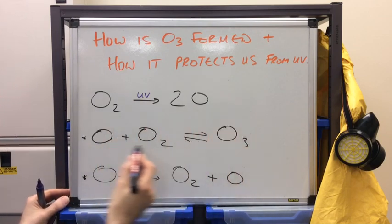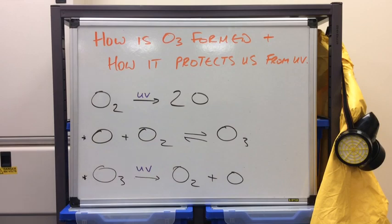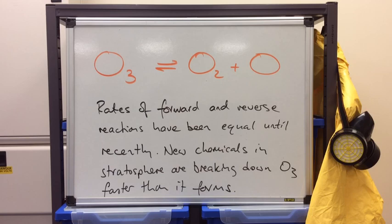This is the process that we have got in the stratosphere. So just to summarise that point, you can see the equilibrium at the top of the board there. The rate of the forward and the reverse reactions. So the forward reaction is the breakdown of ozone. And the reverse reaction is the formation of ozone. The rates of those two reactions have been equal over millions of years until very recently.